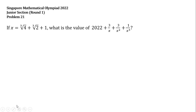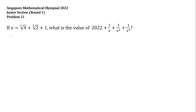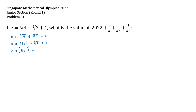So let's start with the first given, which is the value of x. We have x equals the cube root of 4 plus the cube root of 2 plus 1. We can actually write the cube root of 4 as the cube root of 2 squared. So we have x equals the cube root of 2 squared plus the cube root of 2 plus 1.